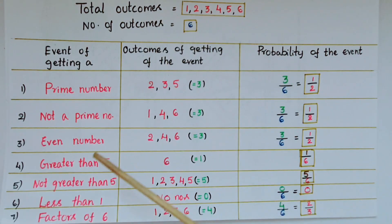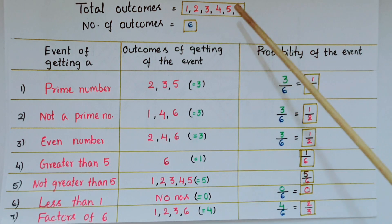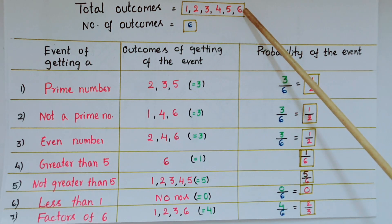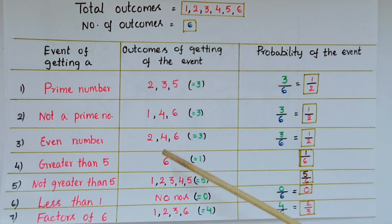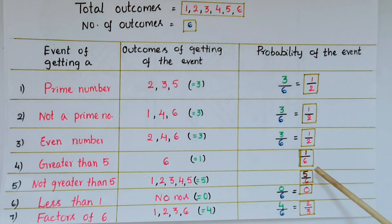Next one is the event of getting greater than 5. So here greater than 5 is only 6. So outcomes of getting this event is only 1 number. So probability of the event is equal to 1 by 6.